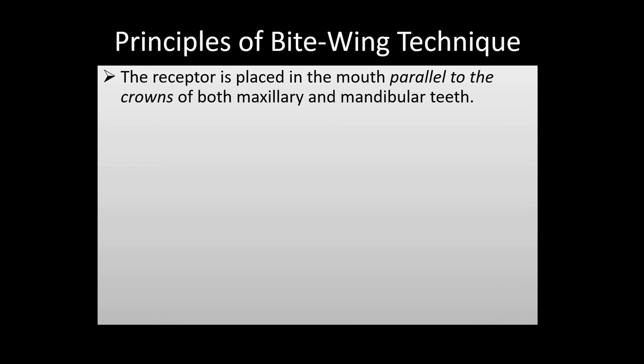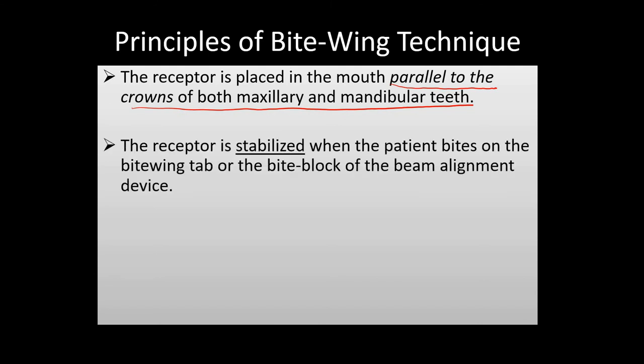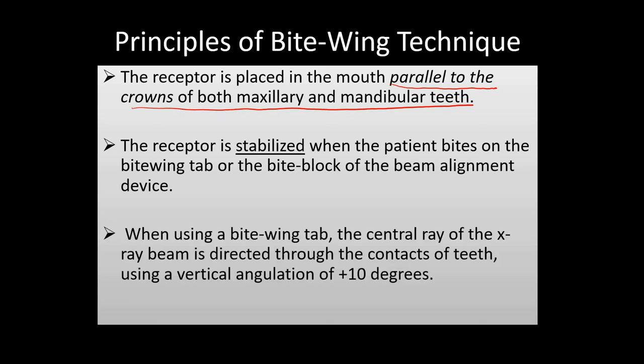The principles of bitwing technique: the receptor is placed in the mouth parallel to the crowns of both maxillary and mandibular teeth. The film is stabilized when the patient bites on the bitwing tab or the bite block of the beam alignment device. The central x-ray beam is directed through the contacts of the teeth at a vertical angulation of plus 10 degrees.